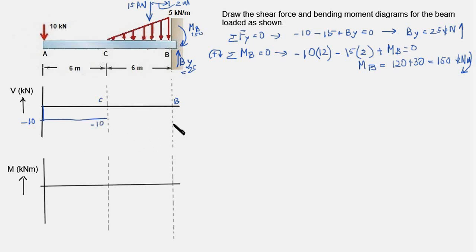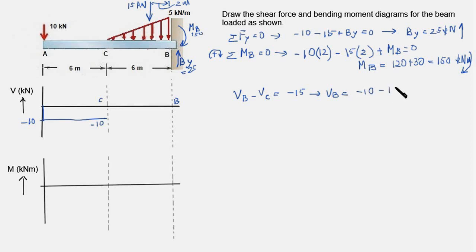Now we compute the shear force at point B. VB minus VC equals the area under the load curve, which is 15 kilonewtons. Since it points downward, it is minus 15. So VB equals minus 10 minus 15, that is minus 25 kilonewtons. We must join the values at C and B. Because the load is a ramp, the shear force curve will be a parabola.